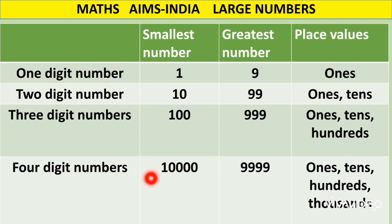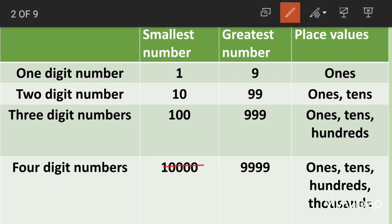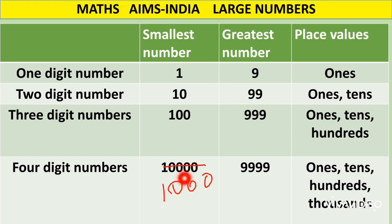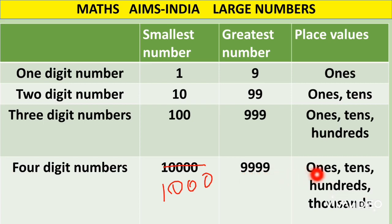Four digit numbers start from one thousand and end at nine thousand nine hundred and ninety-nine. Coming to the place values, four digit numbers have four place values: ones place, tens place, hundreds place and thousands place.